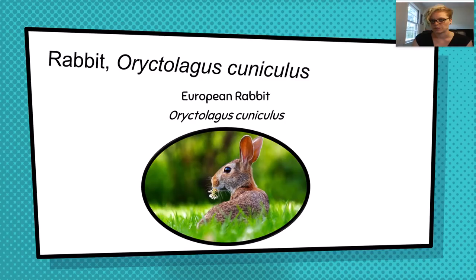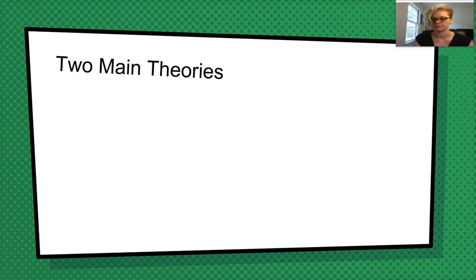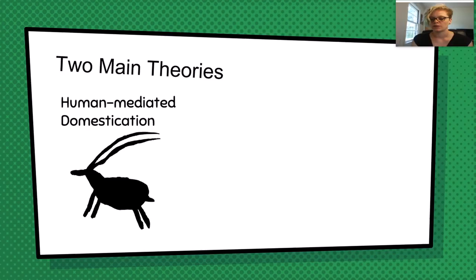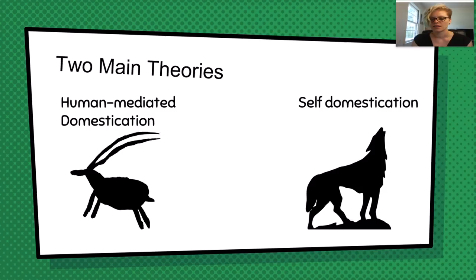While domestication was a unique, nuanced process for each species involved, two generalizations can be made about how the process was started. Human-mediated domestication is the theory where animals were selected by humans specifically to be more docile and useful. Self-domestication is the theory where animals took charge of the domestication process, with animals who could exist near people being the ones most likely to reproduce. Both versions likely played a role for each domesticated species, but most animals are thought to have begun the process themselves, with humans then mediating later stages by actively selecting individuals to breed together.